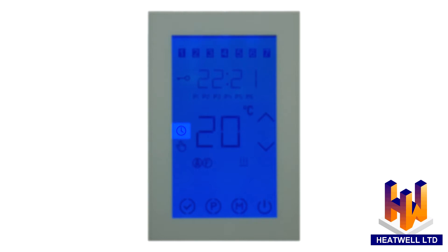This clock symbolizes automatic mode. When the clock is displayed, the thermostat is operating automatically according to its normal programmed schedule. This hand symbolizes that the thermostat is operating in manual mode instead of using its regular automatic schedule. This is the heating symbol. When this is displayed, the floor elements are currently active. These up and down arrows are used to choose selections and temperatures. This is the OK button, used to confirm your selection.